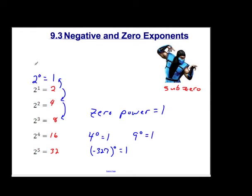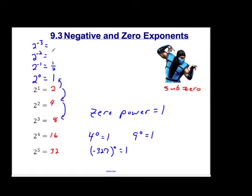So zero power always equals 1. What's next? Can I keep this pattern going? Sure — I go to 2 to the negative 1, 2 to the negative 2, and 2 to the negative 3. The pattern is cutting in half every time I go up. Going backwards: 3, 2, 1, 0, negative 1. So I'm going to cut this in half — this becomes 1 half. And 1 half of a half becomes 1 fourth. And 1 half of 1 fourth is 1 eighth.